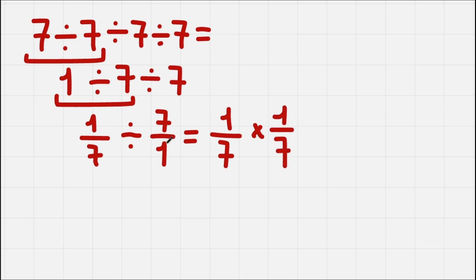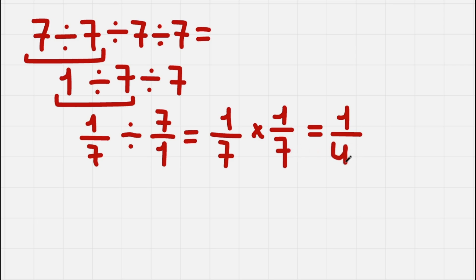We flip this fraction: the denominator becomes the numerator and the numerator becomes the denominator. Now to multiply the fractions, we multiply numerators and denominators. So we have 1 times 1, which gives us 1, and 7 times 7, which gives us 49. That is the final solution: 1 over 49.